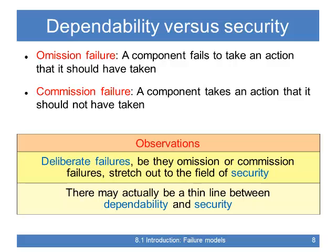A colleague of mine — who explained everything about Byzantine fault tolerance — said what we really need to do is make a distinction between omission failures and commission failures, introduced around 1985. An omission failure is when a component fails to take an action it should have taken. A commission failure is when a component takes an action it should not have taken. Byzantine failures have an association with deliberately malfunctioning attacks, and deliberate failures — whether omission or commission — stretch out to the field of security.